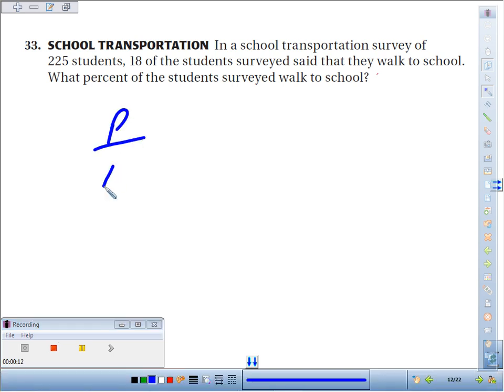We're looking for the percent. Percent is always out of 100. Here we're told that 18 said they walked and we're looking for that percent. The total number of students surveyed was 225, so if we take 100 times 18 and divide by 225,